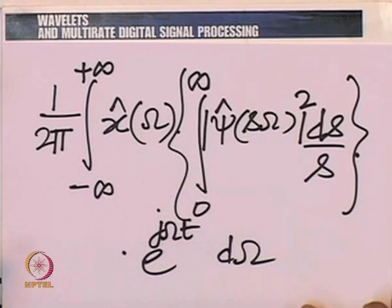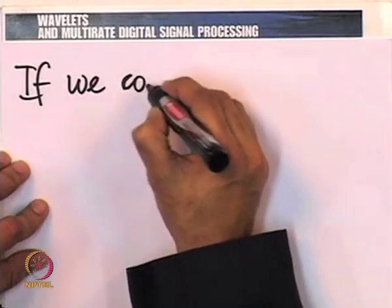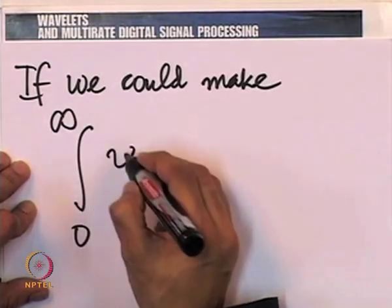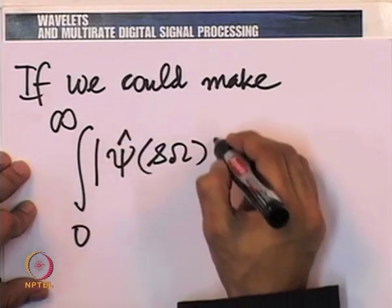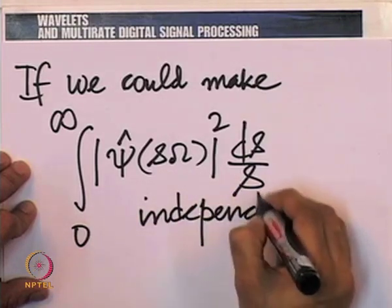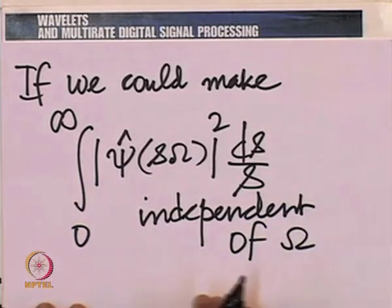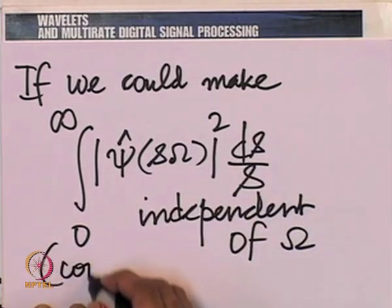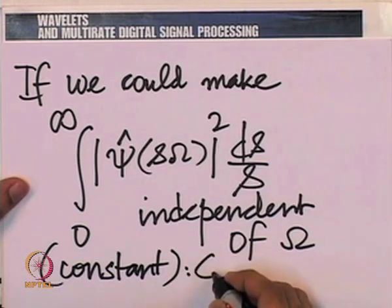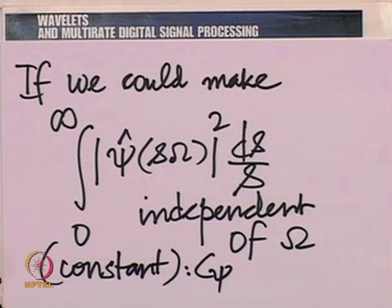If we could make the integral from 0 to ∞ of |ψ̂(sω)|² ds/s independent of ω, then it would just be a constant — dependent only on ψ, not on ω. Once you fix ψ, this should be independent of ω, and that is what admissibility is all about.